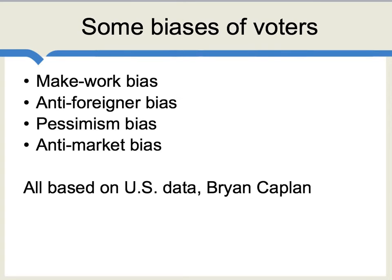Some particular biases of voters have been studied by our colleague Bryan Caplan. Using survey evidence from the United States, Caplan lists a few of these biases. One is what he calls make-work bias — focusing on whether jobs are being created and not on whether those jobs are producing useful output. Another is anti-foreigner bias, very common in democracies. Then there is pessimism bias: people think economic conditions are worse or worsening than they really are. And also anti-market bias — when it comes to understanding the benefits of trade or the problems with price controls, people don't understand as much as professional economists do, and they often make mistakes in an anti-market direction. The particular mistakes often depend upon the country, but you'll find biases like these around the world, not just in the United States.